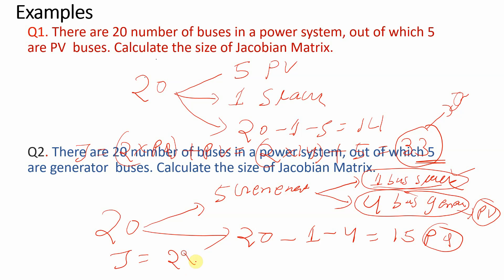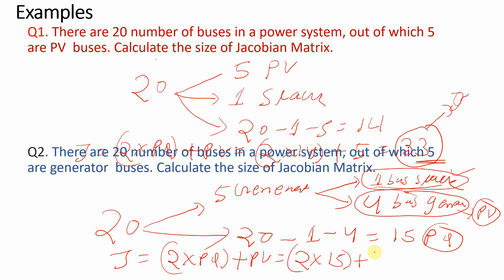The slack bus can no longer be treated as a PV bus, so only 4 generator buses remain as PV buses. Reactive power support buses are not present here. The Jacobian matrix size = 2 × (PQ buses) + (PV buses) = 2 × 15 + 4 = 34.